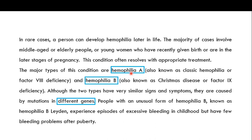There are two major types of hemophilia. Hemophilia A, also known as classic hemophilia, involves Factor 8 deficiency or Factor 8 being totally missing — and this will be the focus of this video. Hemophilia B, also known as Christmas disease or Factor 9 deficiency, involves Factor 9 being deficient or totally missing.